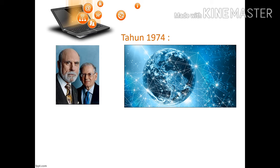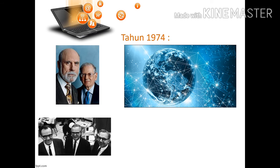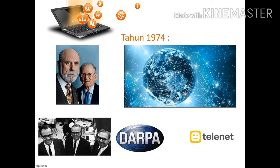Sejarah perkembangan internet yang sangat berpengaruh pada perkembangan teknologi terjadi pada tahun 1974. Pada tahun 1974, terdapat koalisi Bolt, Beranek, dan Newman atau biasa dikenal dengan nama BBN, yang menjadi kontraktor pada ARPANET. Karena mereka menjadi kontraktor di ARPANET, maka mereka membuat suatu aplikasi yang bernama Telenet. Telenet ini melayani paket data untuk pertama kalinya secara publik.